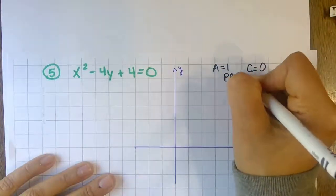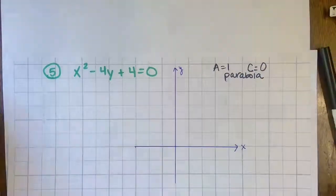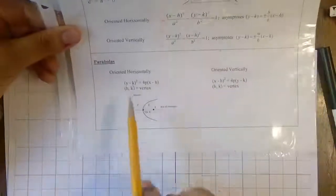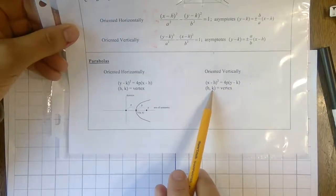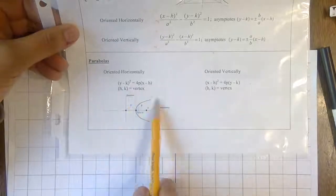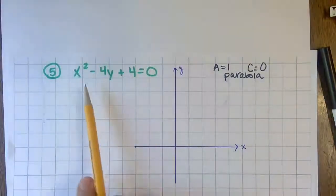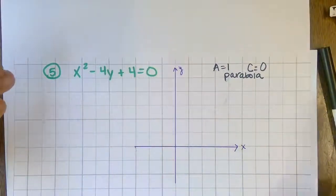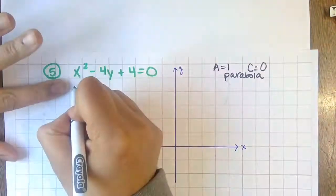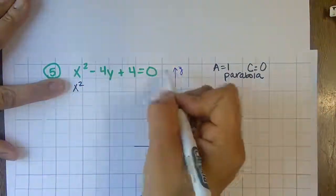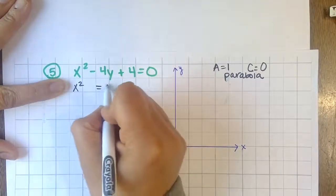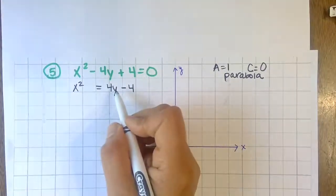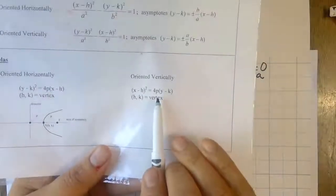Rewrite in standard form. Since it has x², get all x's on one side and everything else on the other side. This will be an x² parabola. Move all other terms to the other side — you have x² with no other x terms. Then factor — four goes into both remaining terms on the other side.